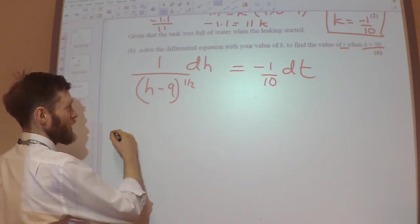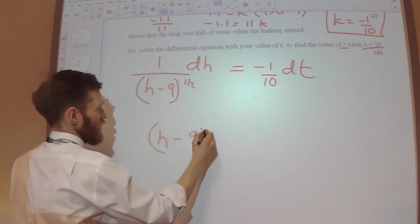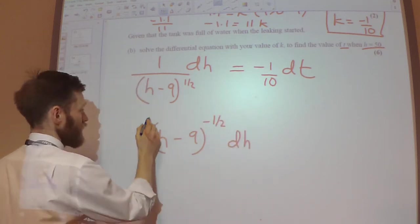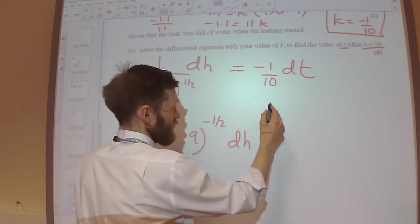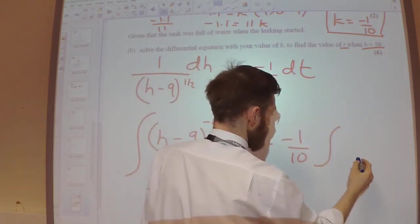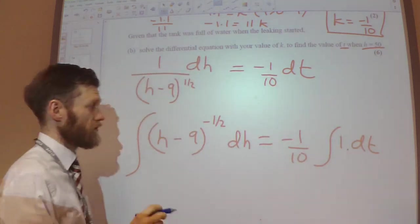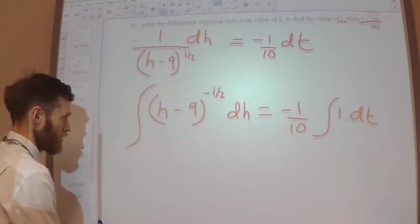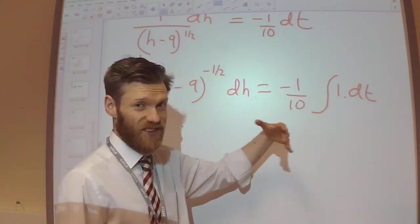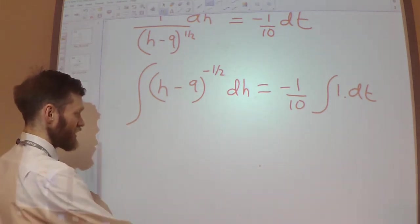Right, let's get this in a form where we can integrate it. So I need to move the H minus 9 to the top and have a minus 1 half power. And over here, I've got the minus 1 over 10, which is a constant at the front, and the integral of DT. Again, you could keep the minus 1 over 10 inside the integral if you prefer, but I've taken it outside to make it easy for myself. Right, let's do some integration.